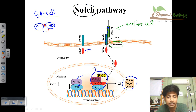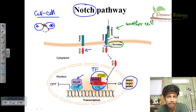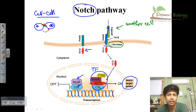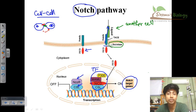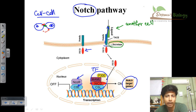This activation transcription factor complex turns on many downstream target genes for the Notch Pathway, establishing the key biological roles Notch signaling performs: angiogenesis, neuronal development, development of the cardiac valve, regulation of the paracrine system, and hematopoiesis. The Notch Pathway is extremely important and is conserved not only in humans but also in C. elegans, Drosophila, and other organisms.